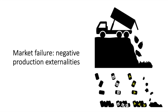Assume a firm is producing widgets and the byproduct of widgets is chemical waste. If that waste is disposed of in a way that harms the environment, there is a possible negative externality — it could be in the harm done to the environment and the suffering of the people who live nearby such hazardous production sites. Let's look at the problem diagrammatically and then apply indirect taxes as a solution.